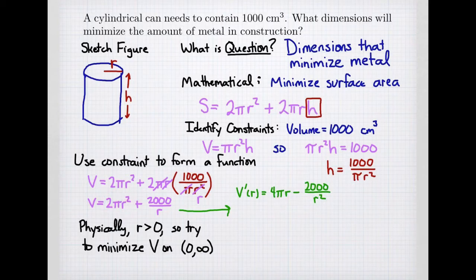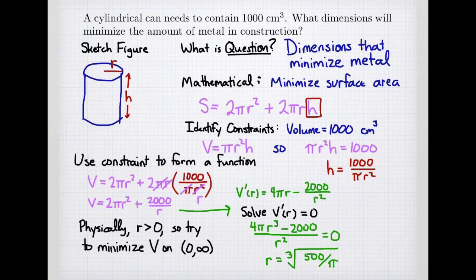And then 2,000 over r. Either using the reciprocal rule or the power rule, we can quickly find that the derivative of 2,000 over r is negative 2,000 over r². We want to know where is the slope 0. That would be a critical point. So we solve for 0.